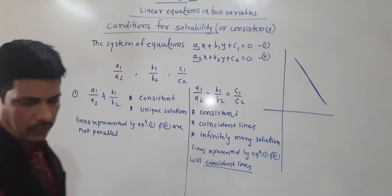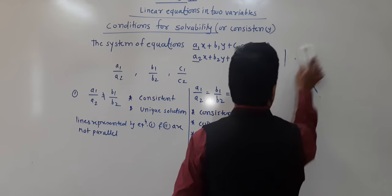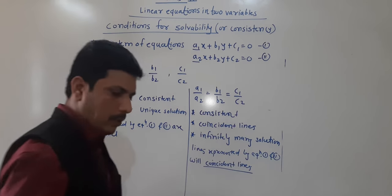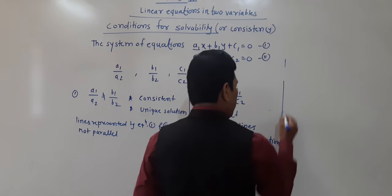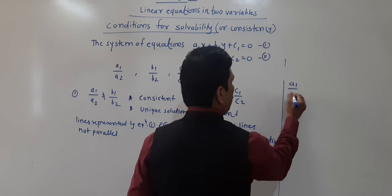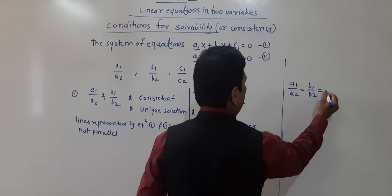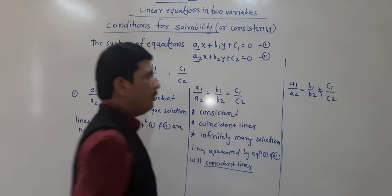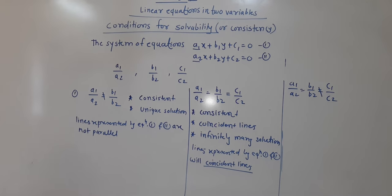Now the third condition: when a1/a2 is equal to b1/b2 but not equal to c1/c2. In this case, the lines represented by equation first and second are parallel and non-consistent.